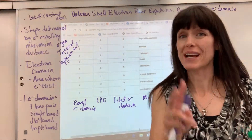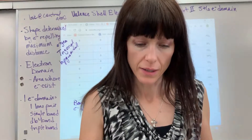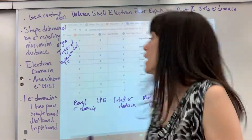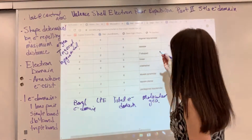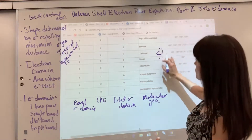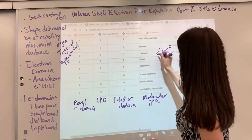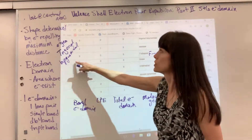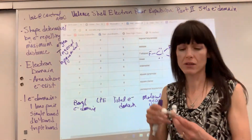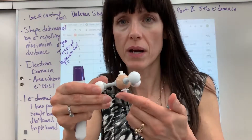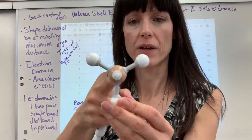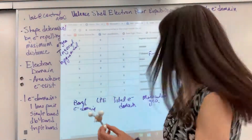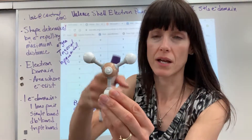Next is T-shaped. Now we have two lone pairs in the five-electron-domain arrangement. The example is chlorine trifluoride, ClF₃. The chlorine has two lone pairs and three fluorine atoms. The electron geometry is still trigonal bipyramidal, but the molecular geometry is T-shaped. If you connect a straight line across and then one going down, it forms a T. Seesaw and T-shape are the names you just have to memorize — they're both in the five electron domain category.